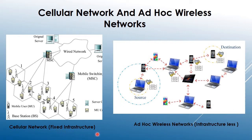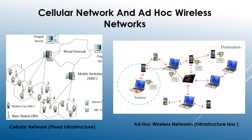The cellular network is represented as a fixed infrastructure network, while the ad hoc network is represented as an infrastructure-less network. In the cellular network, we have a base station, mobile switching center, and server to establish a call between users, and a centralized system for call maintenance and costing. In mobile ad hoc network, there is no centralized architecture — each and every node has equal capability to transmit information from one node to another.